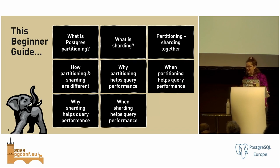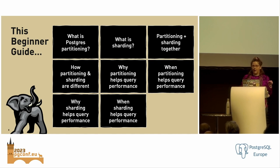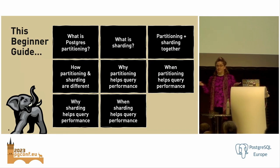In today's beginner's guide, we're going to go through eight different chapters. The first is what is Postgres partitioning, and then we'll talk about sharding and what that is, and the fact that you can use them together and how they're different. We'll go through a quick comparison table. And then we're going to talk about why partitioning can help improve your query performance, as well as when it does that and when it doesn't. Similarly, why sharding can help improve your query performance, and when it does and doesn't do that.